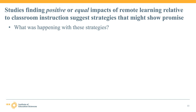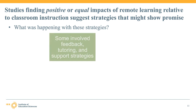While more rigorous research is needed to definitively say this, here's what we found. First, positive and neutral finding studies involved feedback, tutoring, or support strategies. Over 40% of all eligible studies grappled with various ways to provide additional support to students. One meta-analysis looked at effective practices for communicating with students virtually. Several studies explored intelligent tutoring systems that tailored feedback or scaffolded instruction based on how students were responding to questions. Some involved collaboration, and one even fostered argumentative discourse to support persuasive writing.